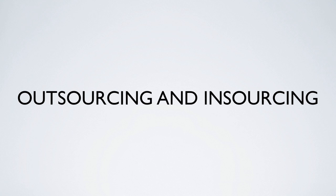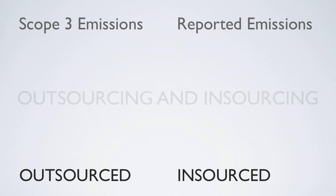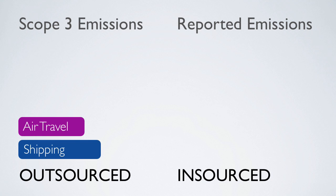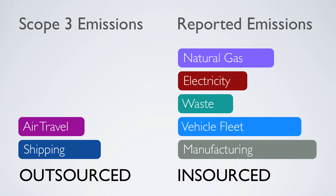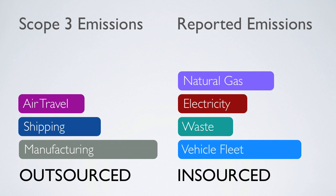Outsourcing and insourcing. We have now looked at the recalculation of base year emissions for acquisitions and divestments. Another common structural change is the outsourcing and insourcing of greenhouse gas emitting activities, which has basically the same effect on a company's emissions as acquiring and divesting business units. The only difference is that a company that outsources or insources an operation doesn't necessarily buy or sell that operation. A typical example is a small vertically integrated manufacturing company. If the company decides to outsource the manufacturing to another company overseas, it would appear as if its emissions decreased substantially, when in reality the emissions were simply shifted to a company overseas. In order to maintain consistency, the company would recalculate its base year emissions to take into account the outsourcing of the manufacturing.